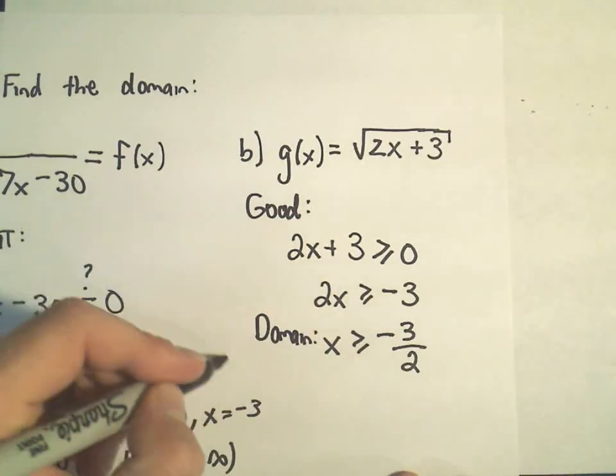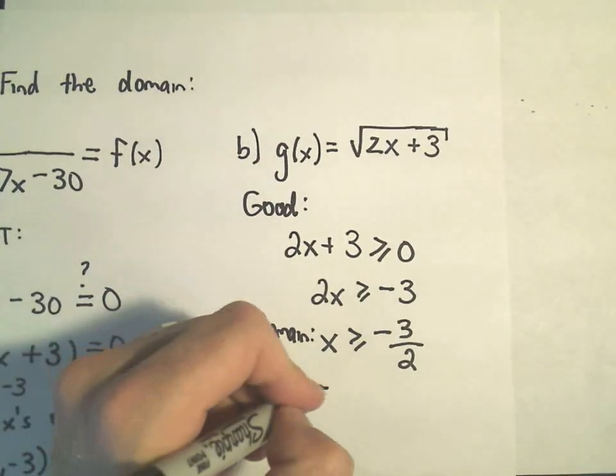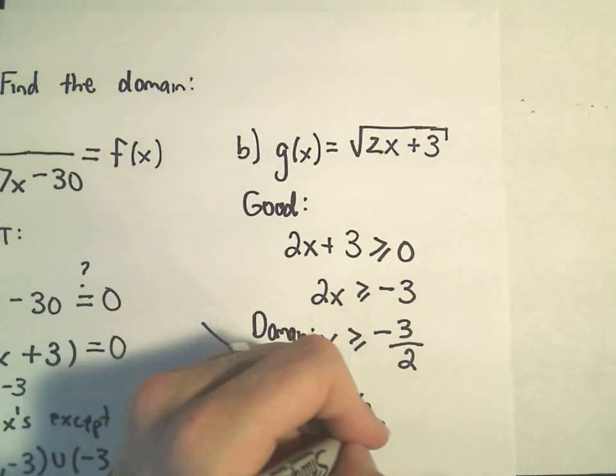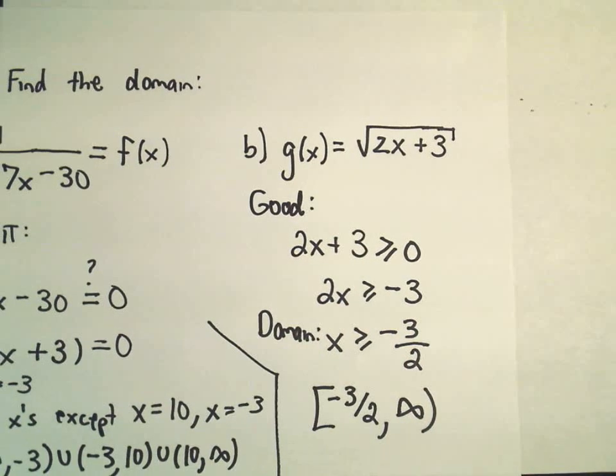So again, this is my domain in this case. And in interval notation, we can write that as bracket negative 3 halves up to infinity. And that would be the domain for our radical or our square root function.